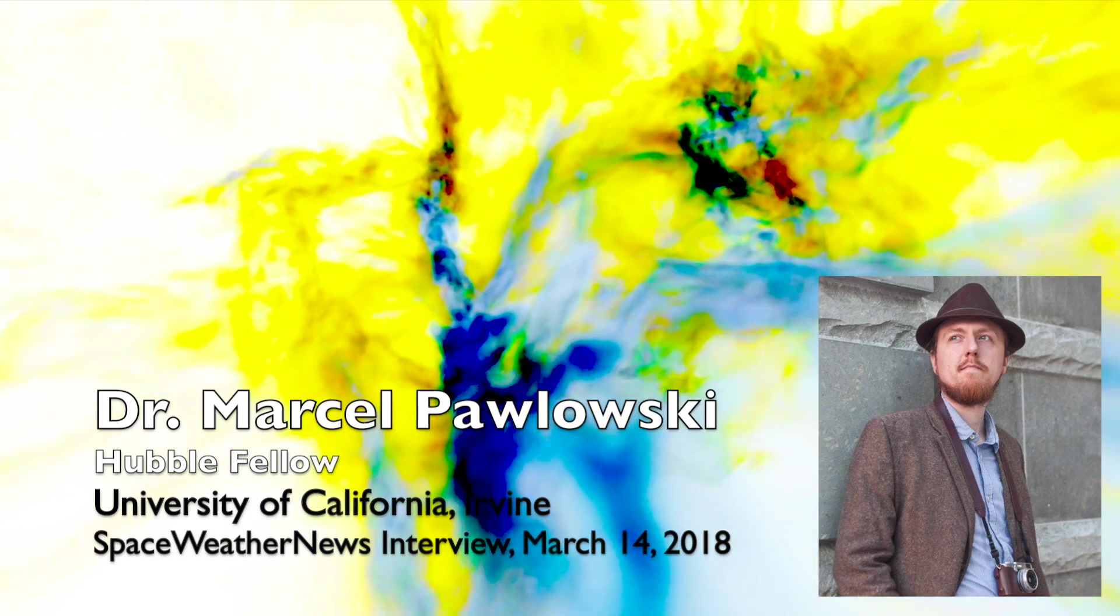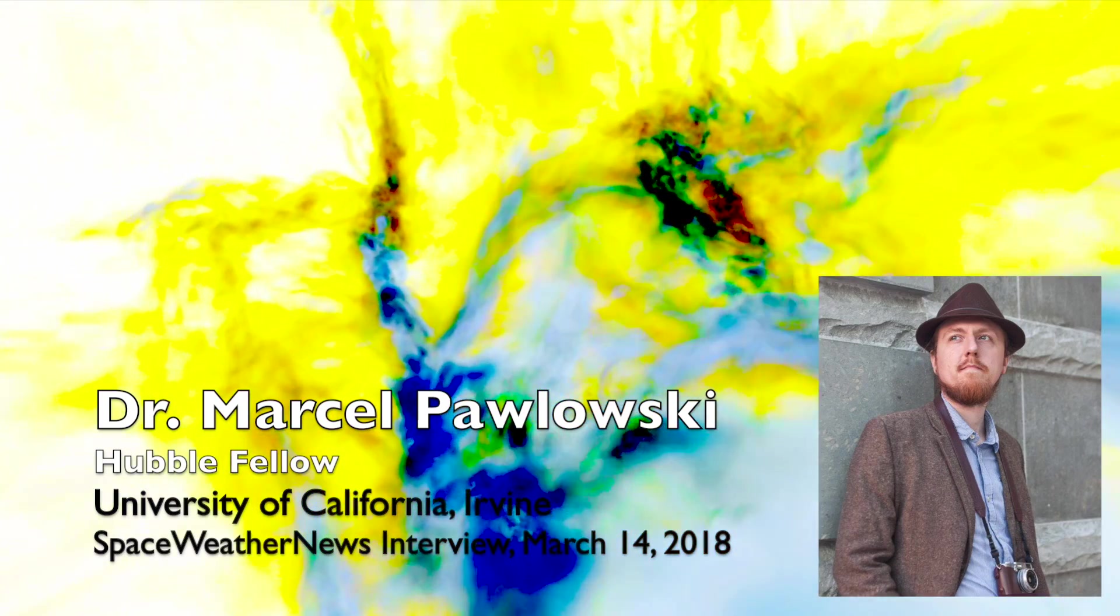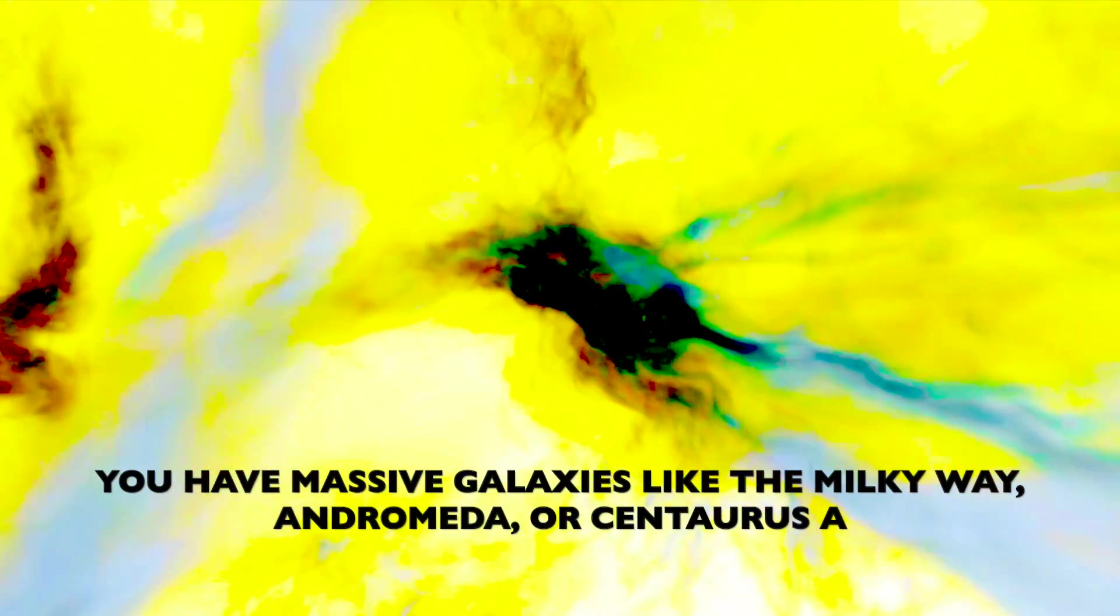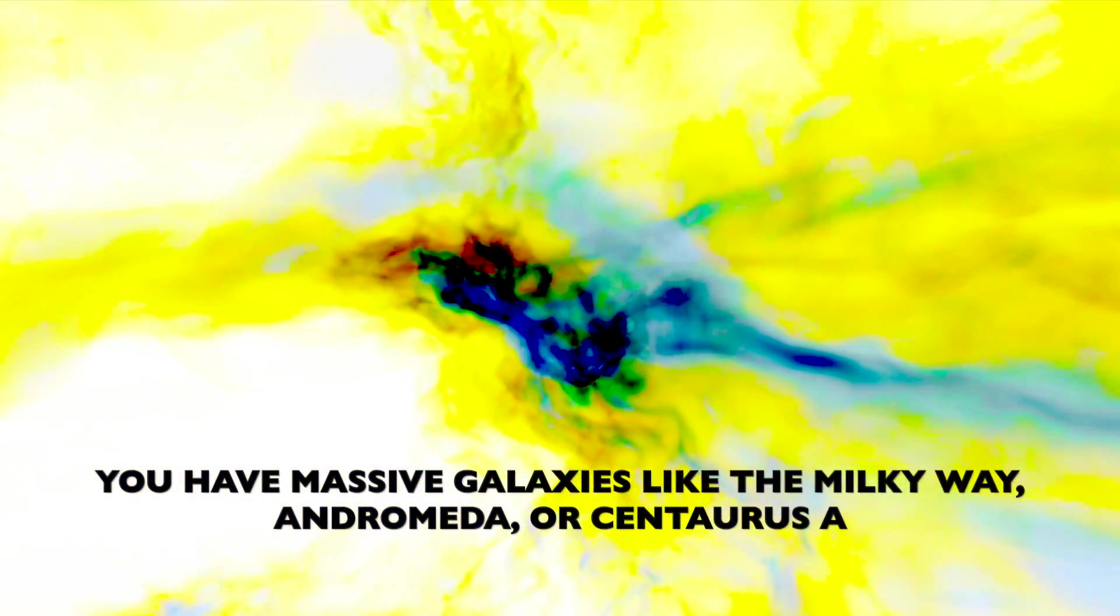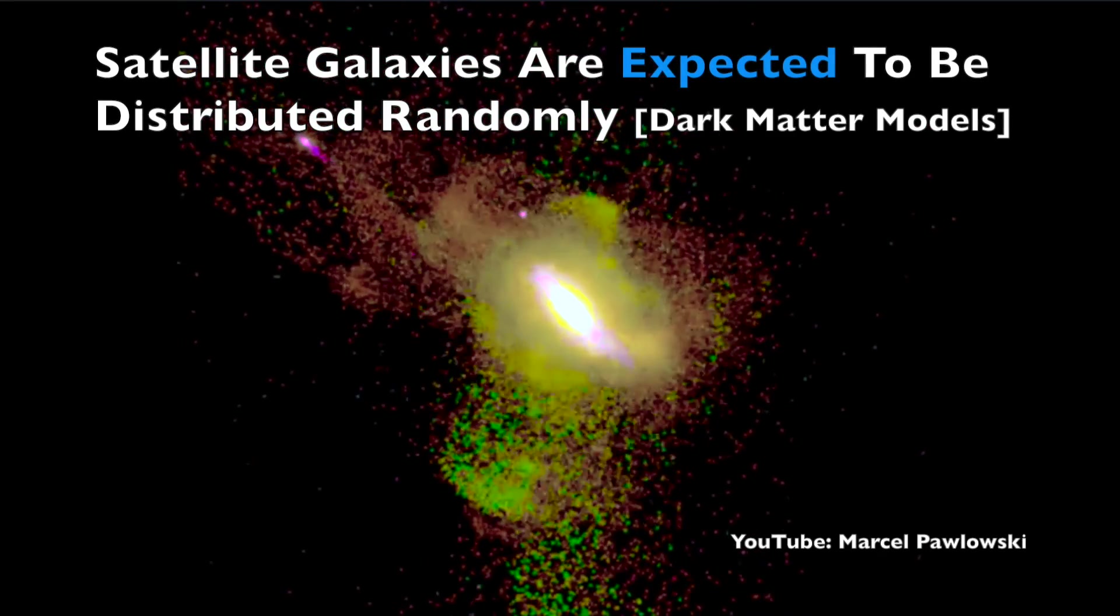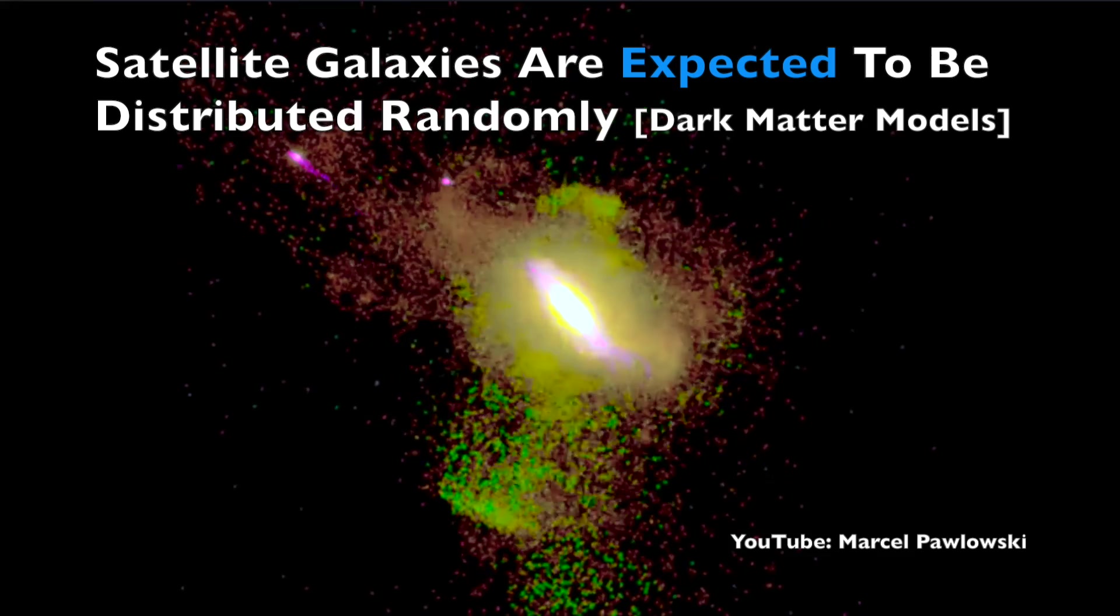Most of my work and our recent work focuses on looking at the distribution and motion of satellite galaxies around their host. You have a massive galaxy like the Milky Way, Andromeda, or in this case Centaurus A, and they have their own entourage of smaller galaxies which are expected to be distributed rather randomly.